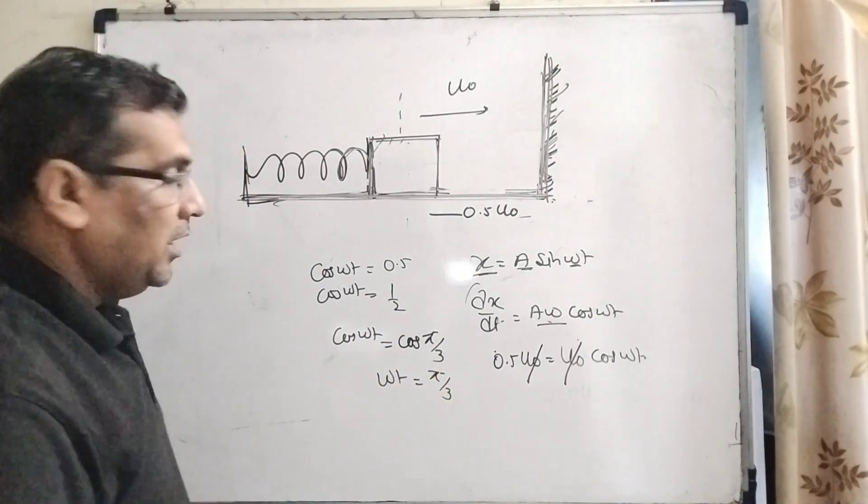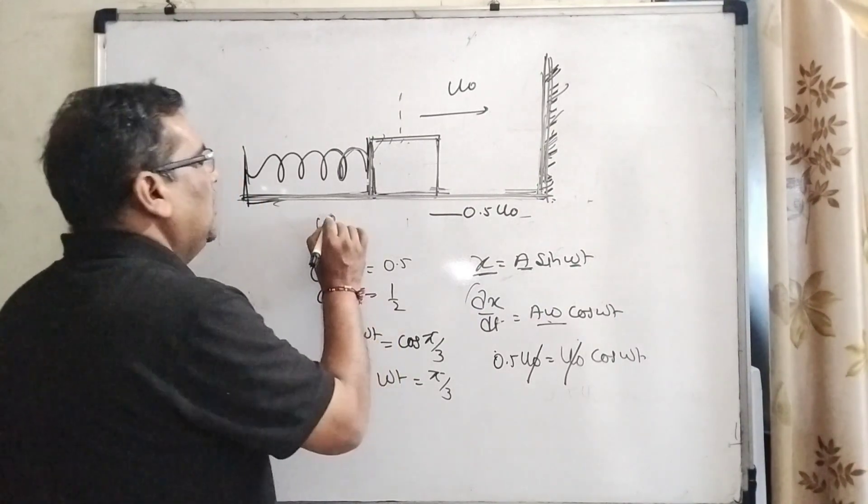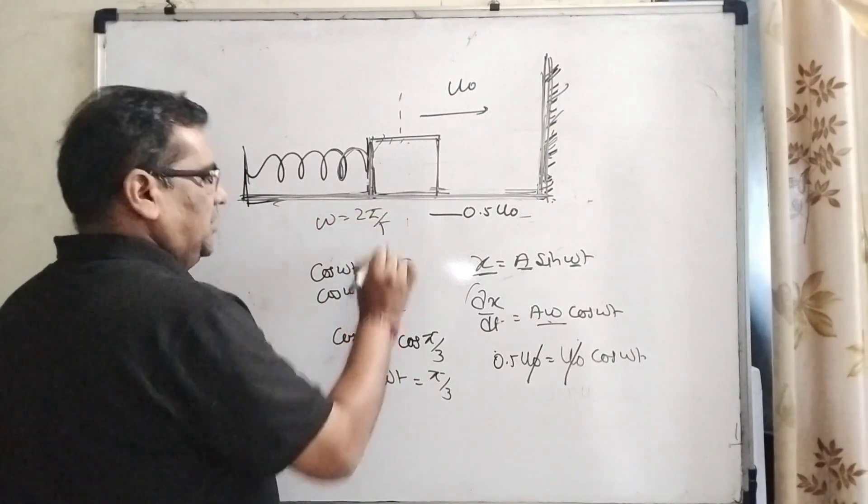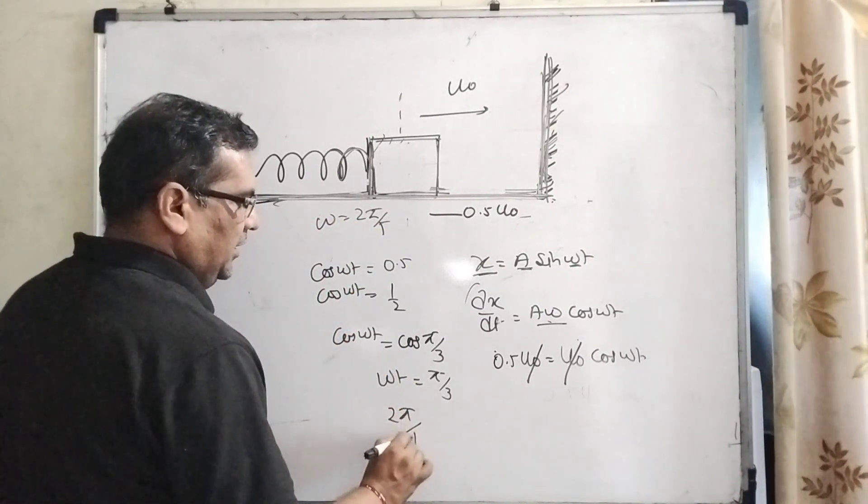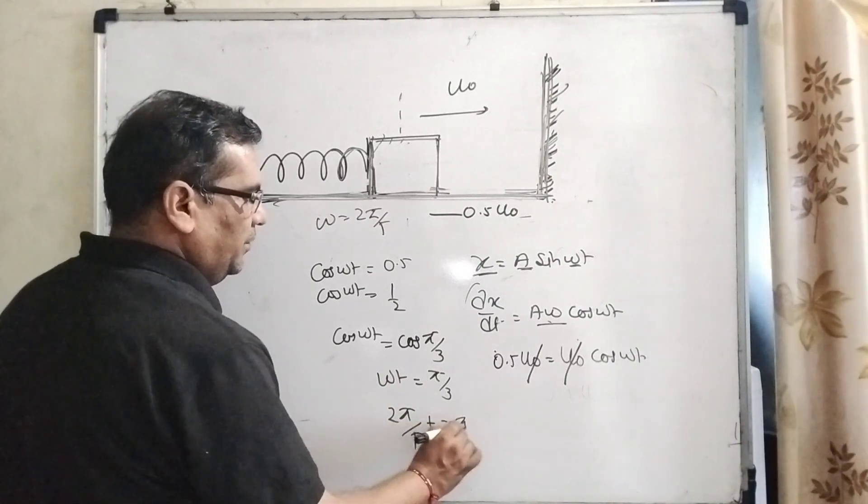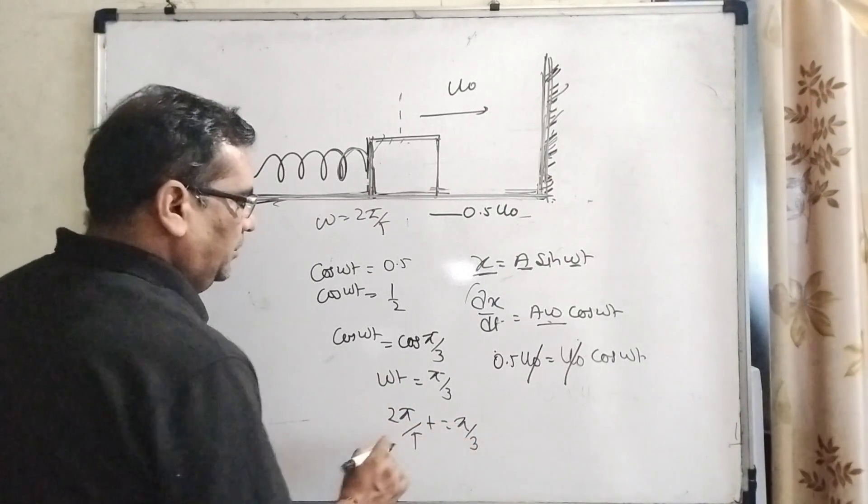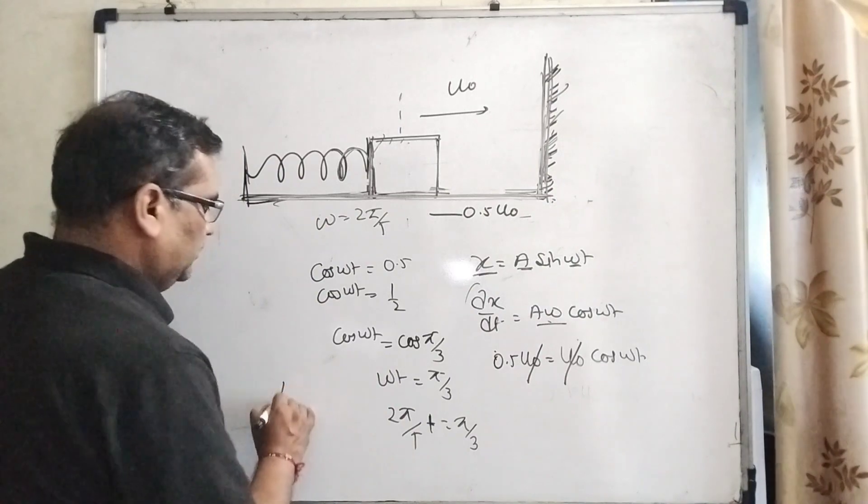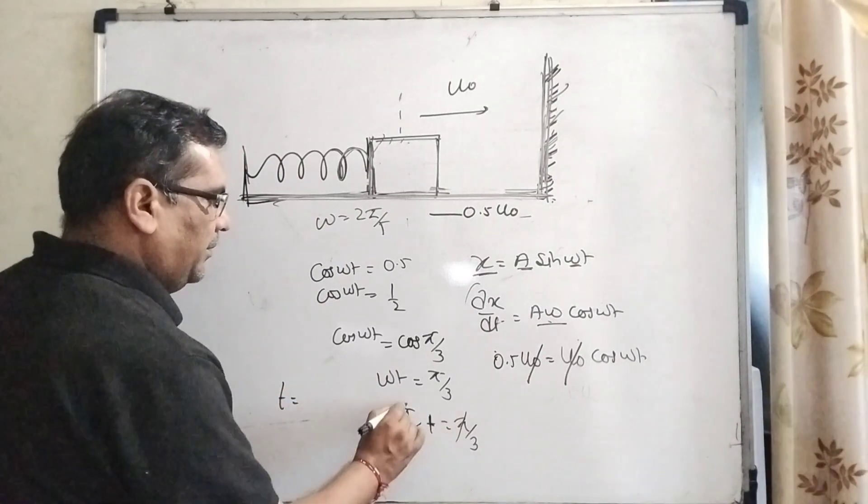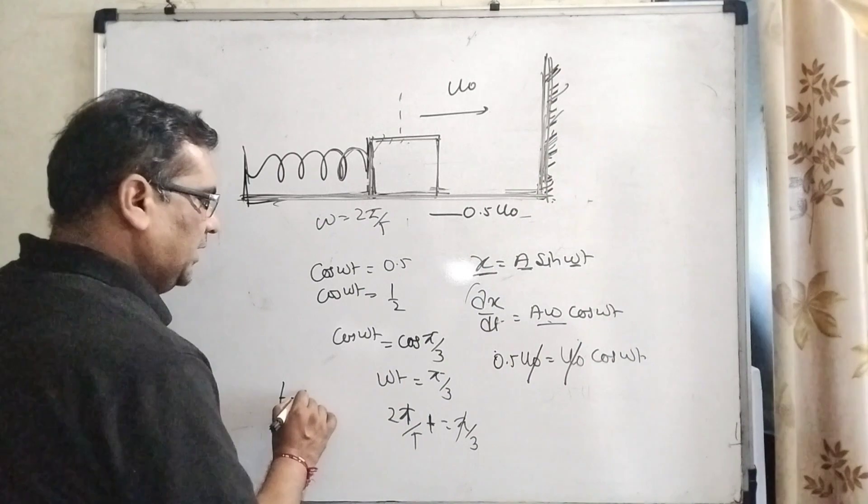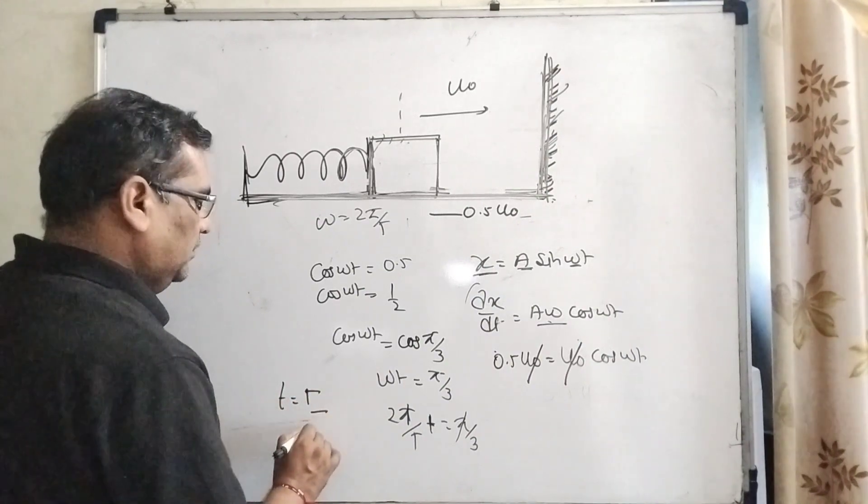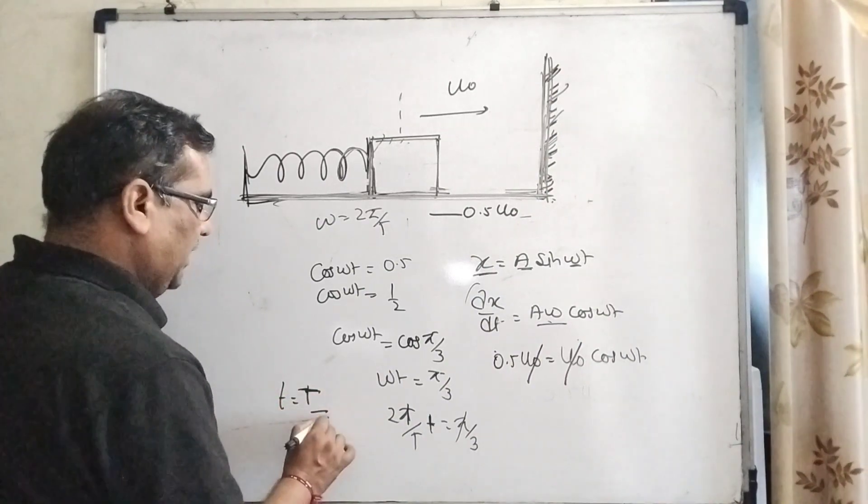What is the value of omega? Omega can be written as 2 pi by T. So here 2 pi by T times t equal to pi by 3. So now, t equal to pi by 3 divided by 2 pi by T, which gives small t equal to capital T by 6.